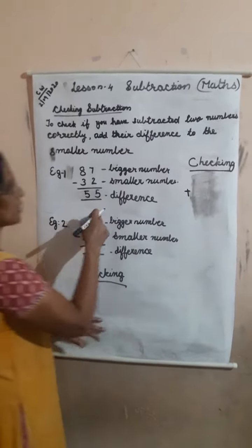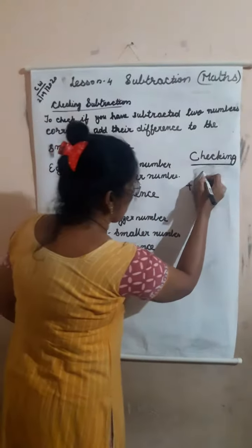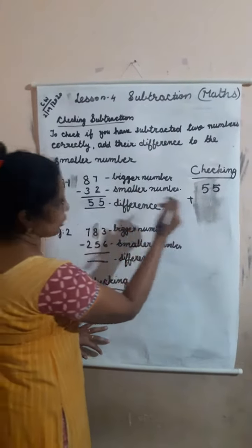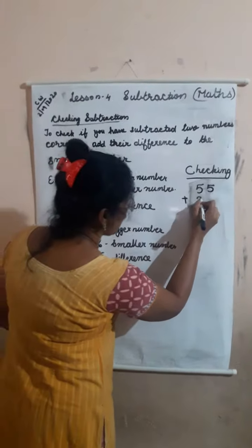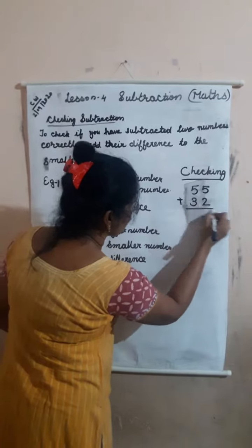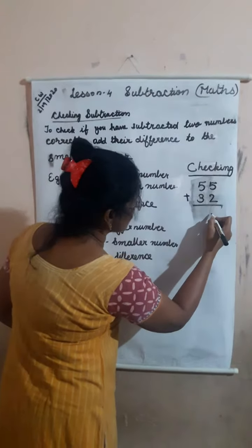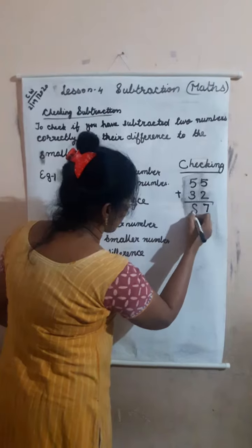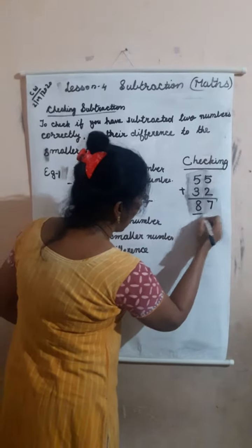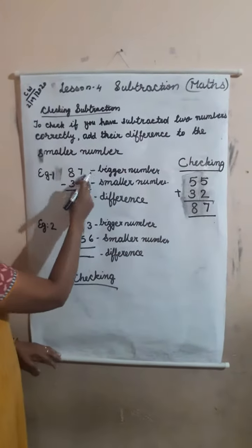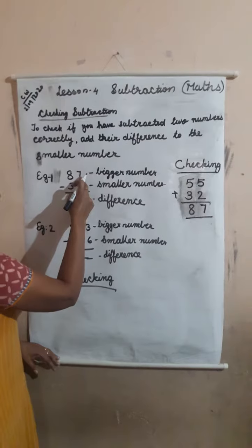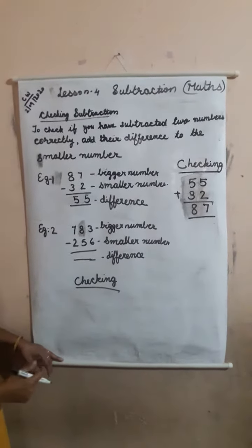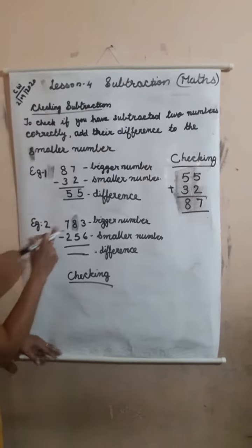Now checking. Difference 55 plus the smaller number 32. 55 plus 32: 5 plus 2 is equal to 7, and 5 plus 3 is equal to 8. Answer is 87. We got the answer as 87, so our subtraction is correct. Look at example 2.